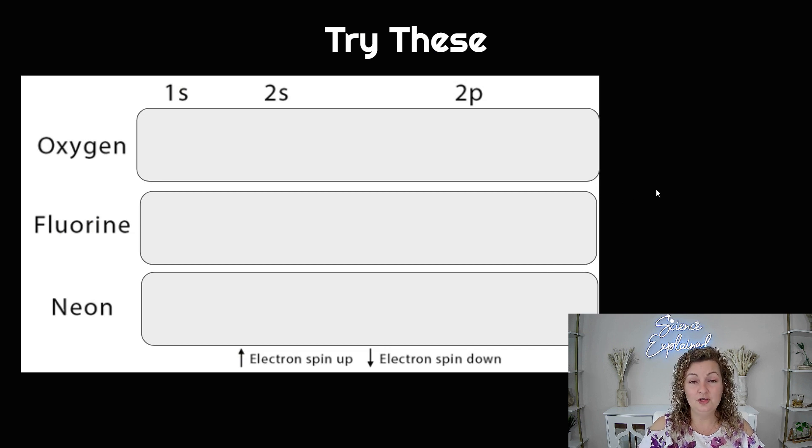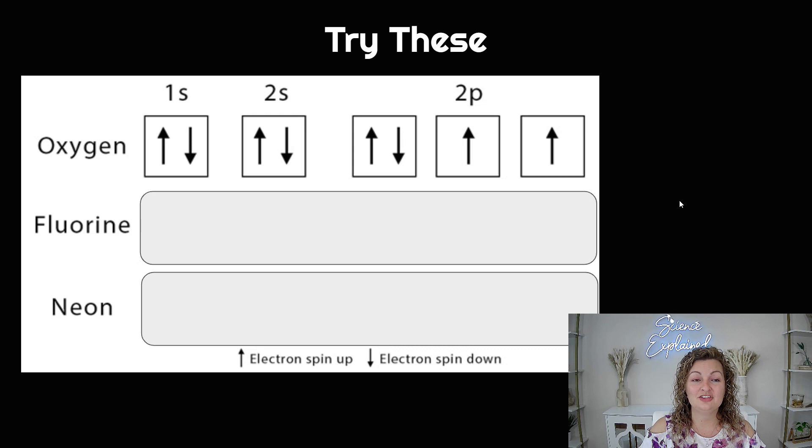So if you want to go ahead and pause this video and try to write the orbital diagrams of oxygen, fluorine, and neon, and then I'll come back and show you the answers. All right, are you guys ready to look at this? So let's first look at oxygen. Oxygen, we have two electrons in our 1s and two electrons in our 2s, and then in our 2p, we have four electrons.